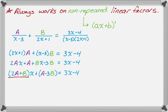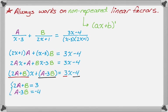Comparing coefficients: on the left-hand side the coefficient of x is 2a plus b, and on the right it's 3, so 2a plus b equals 3. The constant term on the left is a minus 3b, and on the right it's minus 4, so a minus 3b equals negative 4. Solving this system by multiplying the bottom equation by negative 2 and adding down gives 7b equals 11, so b is 11 over 7. Then multiplying the top by 3 and adding gives 7a equals 5, so a is 5 over 7.